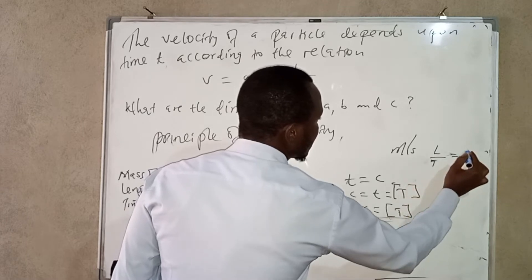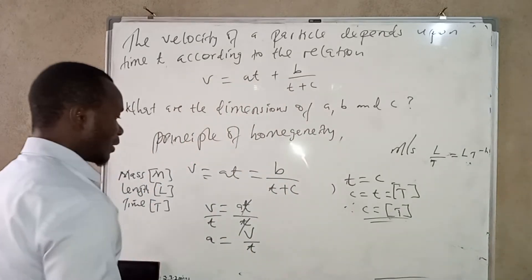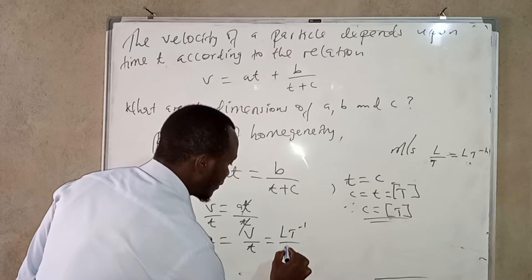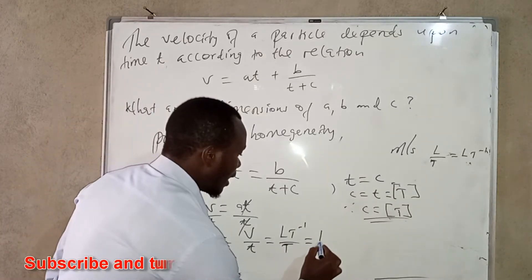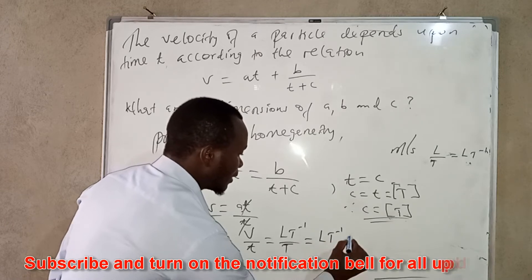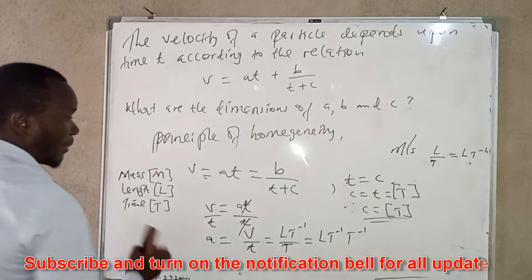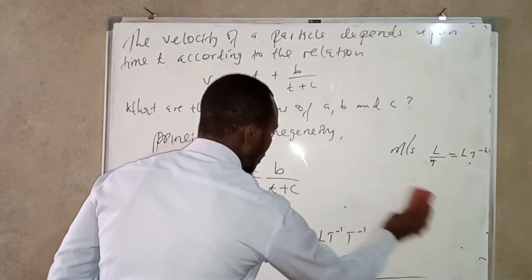Like this which is L T to the power negative one in terms of dimensions. So from this we can plug in L T to the power negative one over t. When this one comes up it is going to be L T negative one T negative one. So since it is the same power we can add the powers.